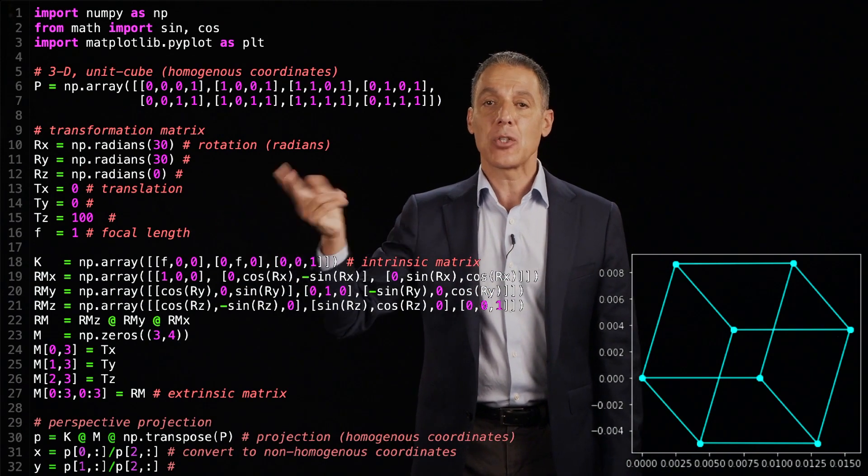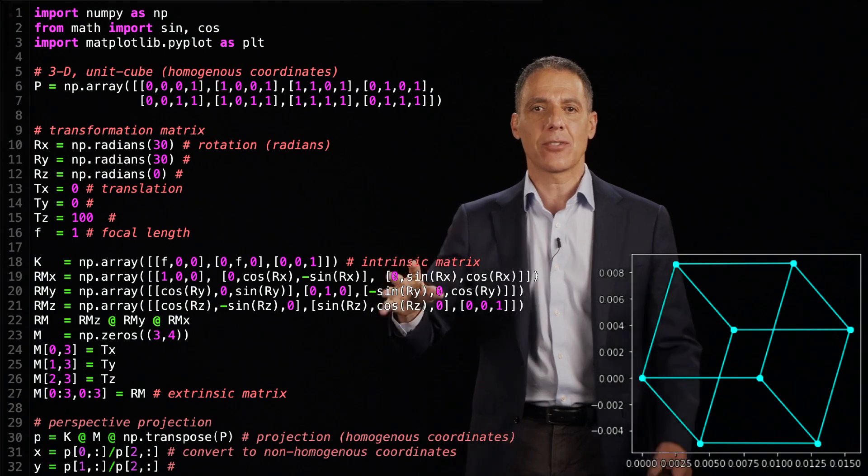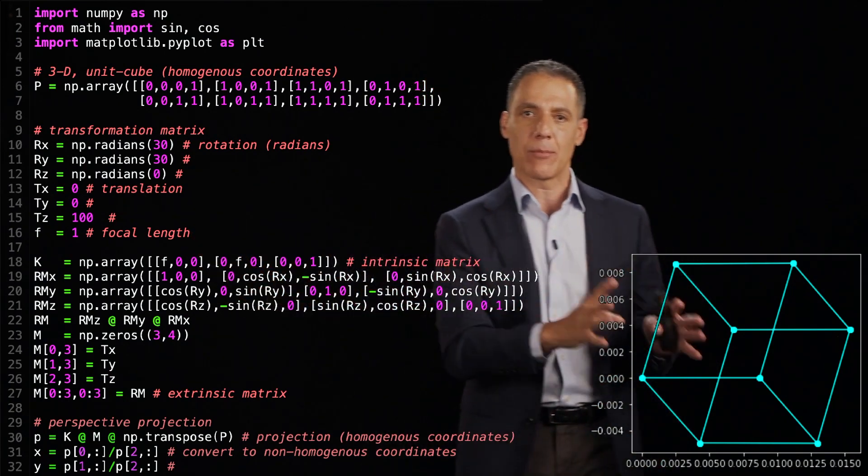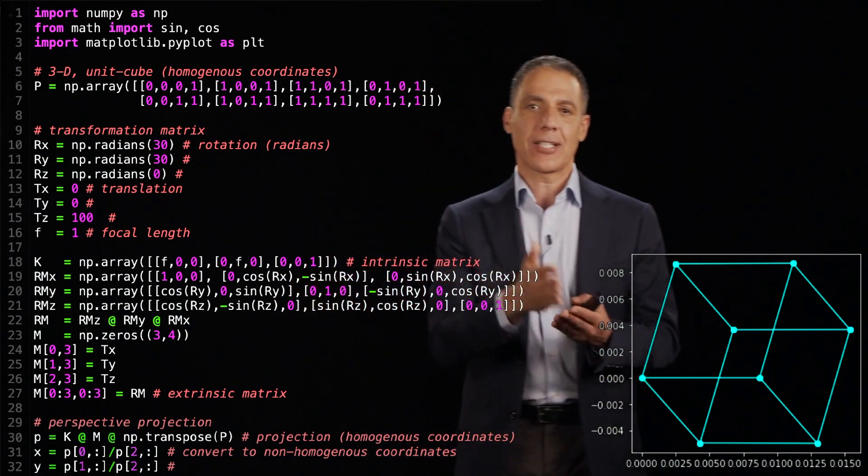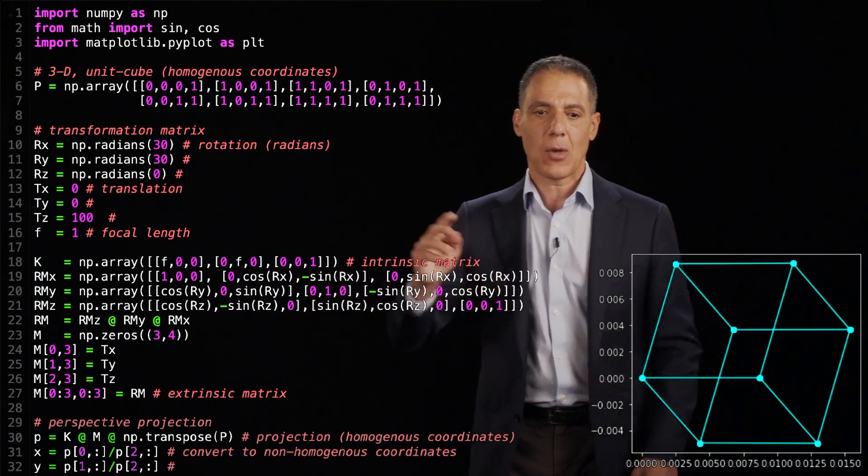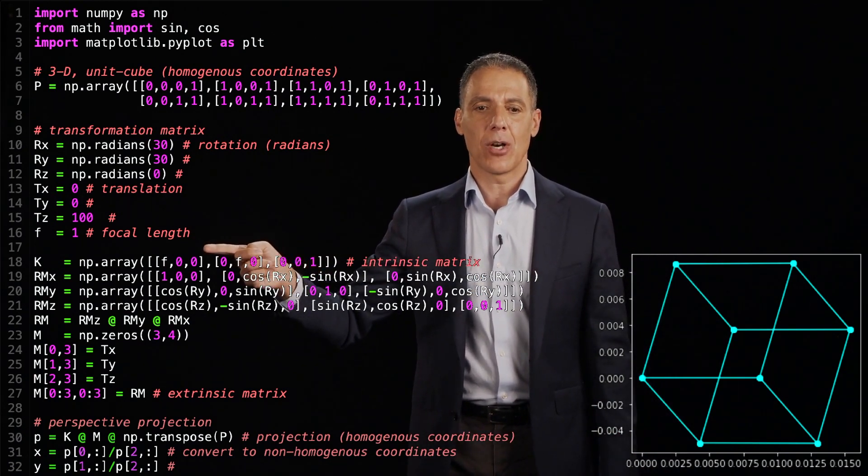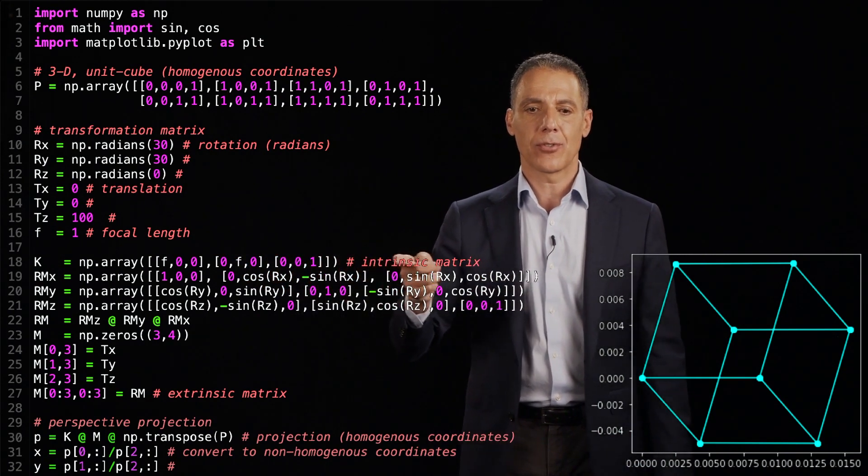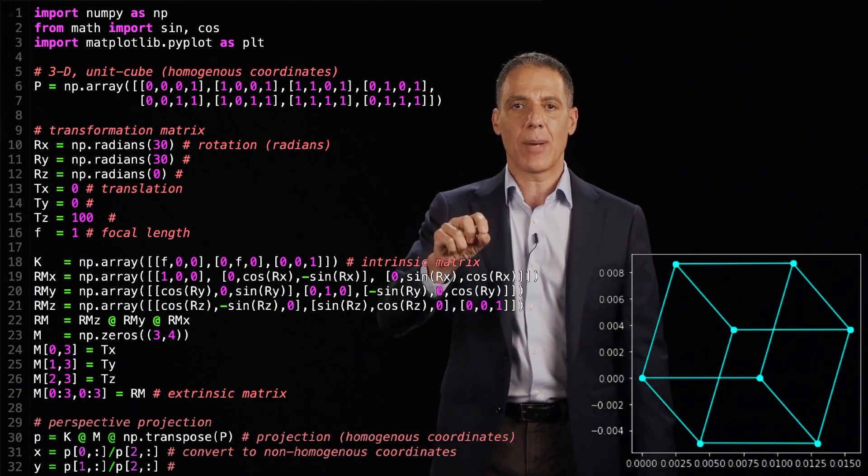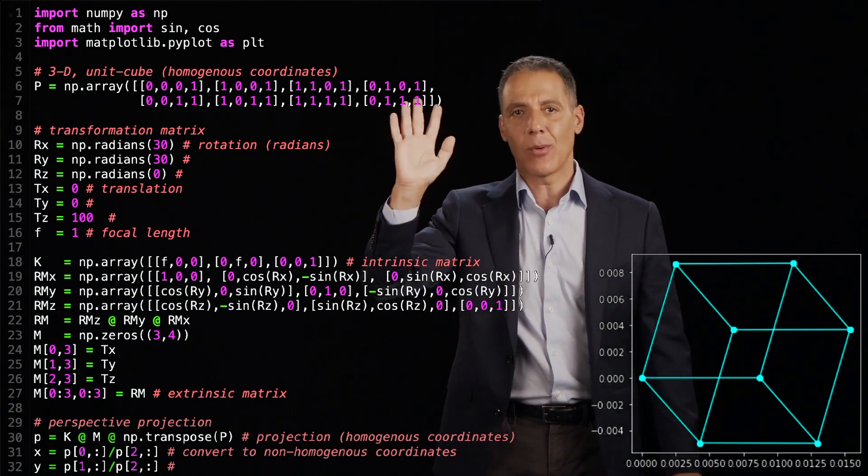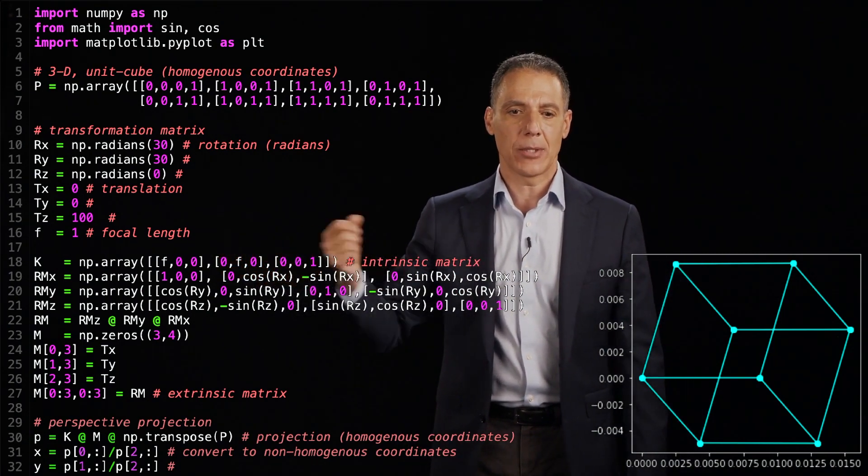Now we're going to define two matrices, the intrinsic matrix and the extrinsic matrix. The extrinsic matrix relates the world coordinate system to the camera coordinate system. And then the intrinsic matrix takes the camera coordinates and projects them into the sensor. So, here's my intrinsic matrix. I've got F00, 0F001. So, that's the diagonal matrix with F and the two top parts, one on the bottom. And Cx, Cy, I just left off because I don't want to worry about translation right now.